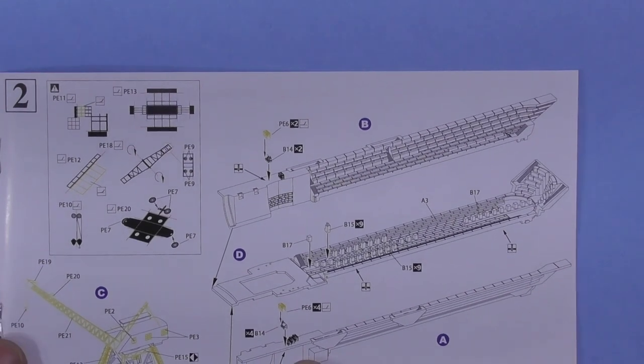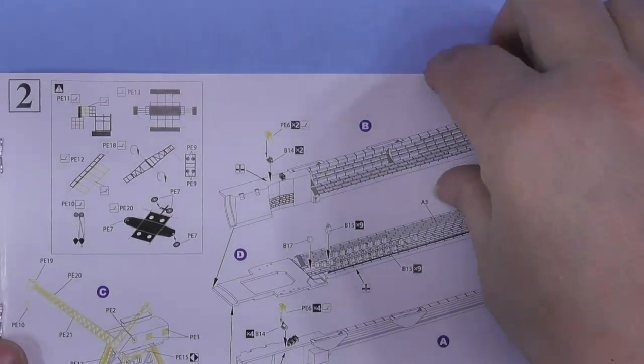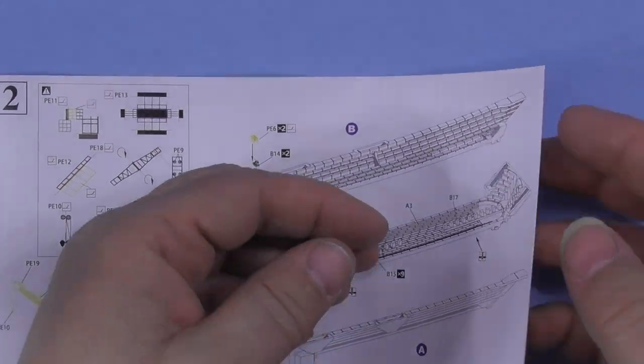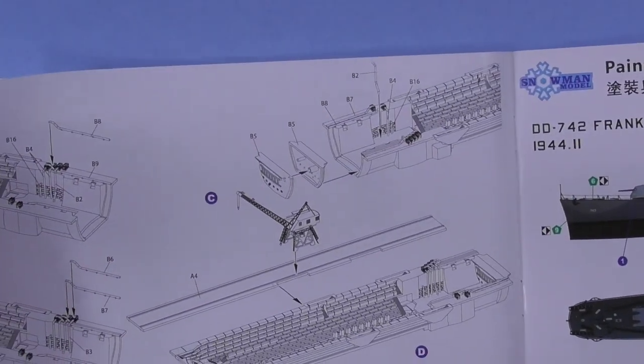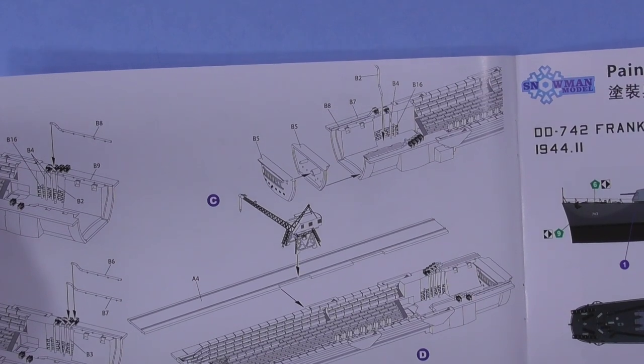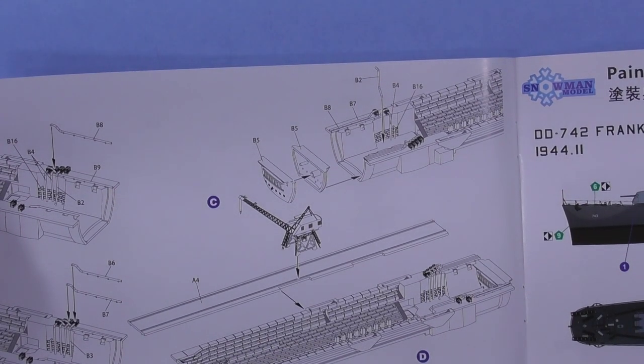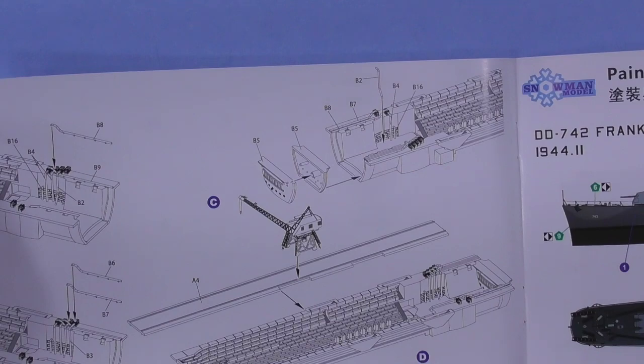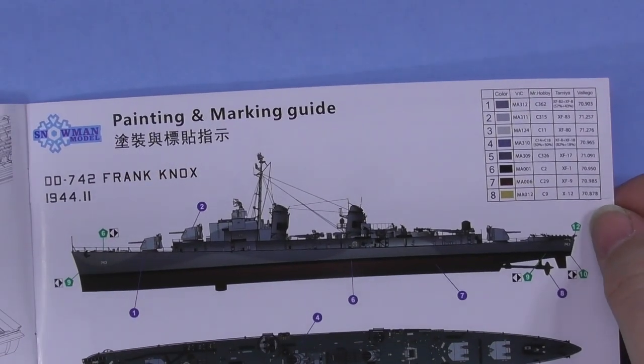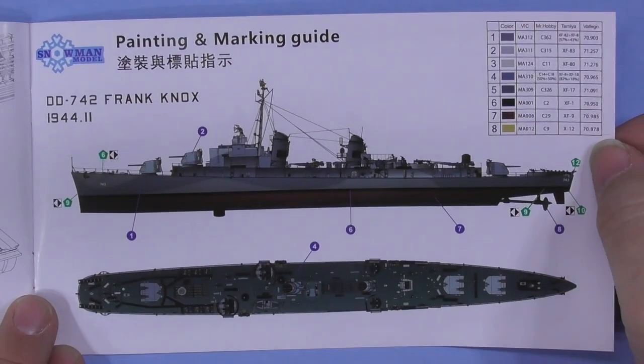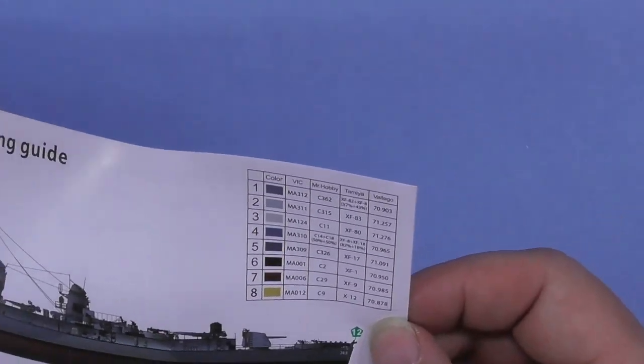And then you're gluing all the sections together of the dry dock, not with the crane yet. Lastly you're adding the crane, and then you'll sit the ship in there. There, there's the markings for the Frank Knox. This one does have a color call-out.